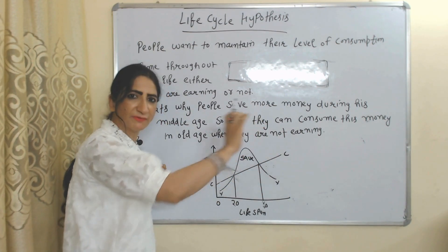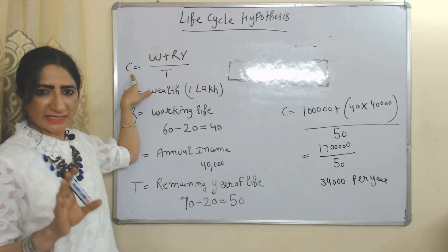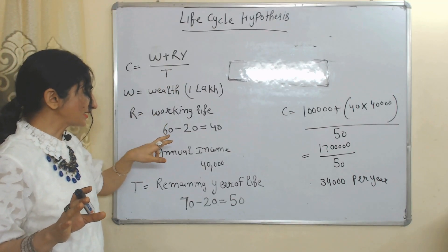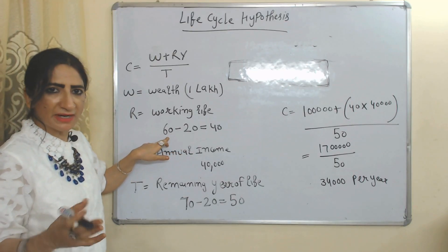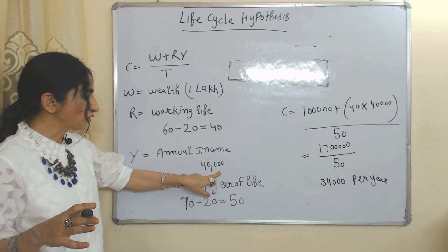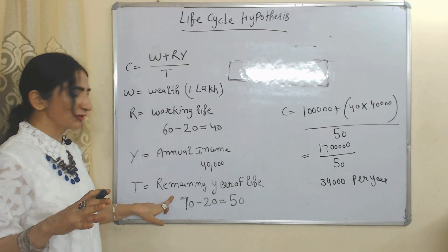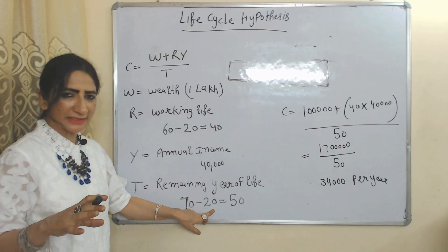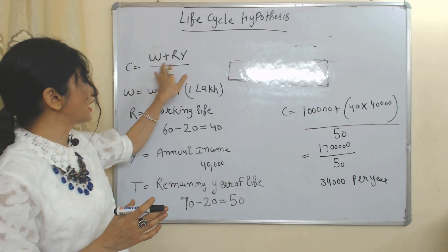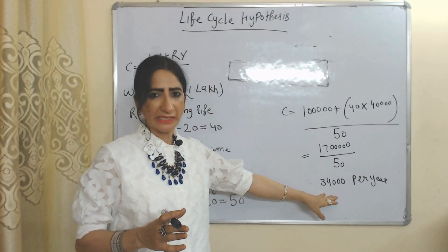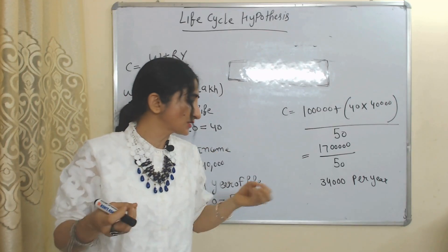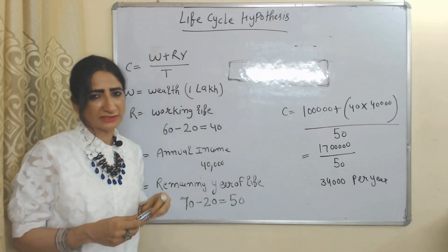The formula involves C (consumption), W (wealth, assumed as 1 lakh), R (working life: age 60 minus 20 equals 40 years), and L (remaining years of life: life expectancy 70 minus 20 equals 50 years). Putting all values into the formula gives an answer of 34,000 per year — meaning in order to maintain the same consumption level throughout life, a person would consume 34,000 per year. This concludes the discussion on all four consumption hypotheses.